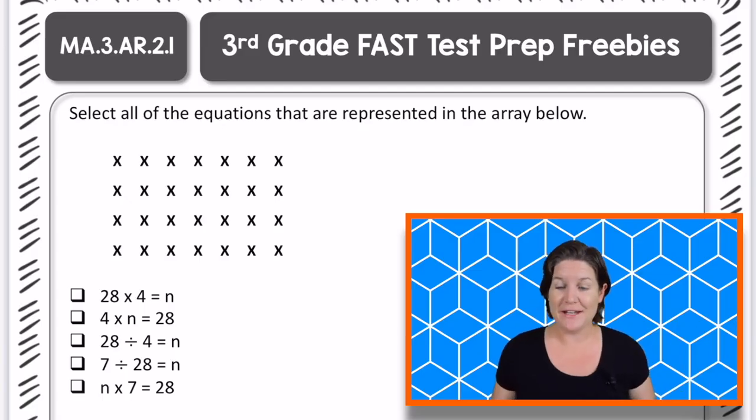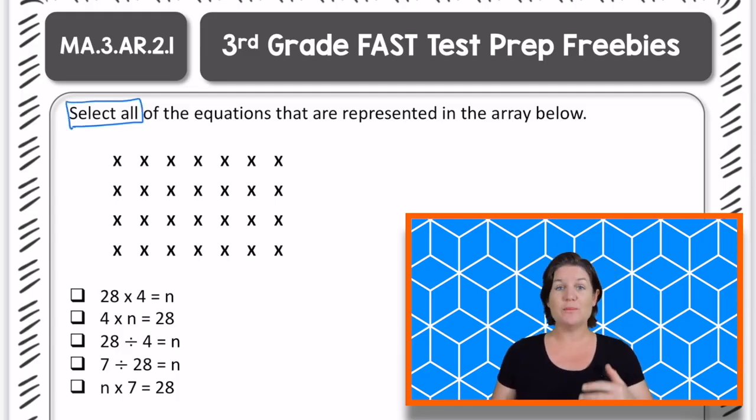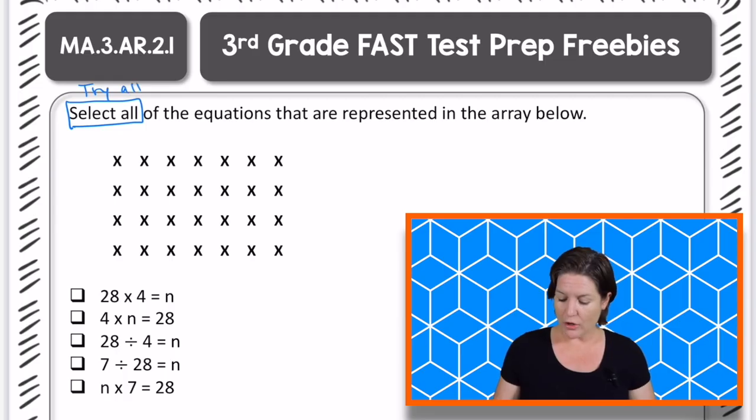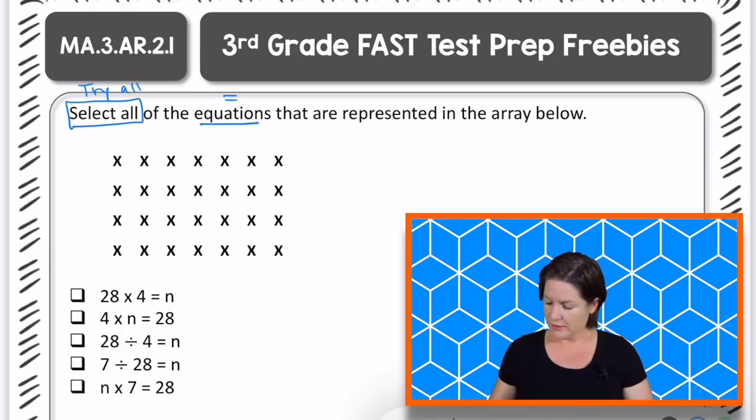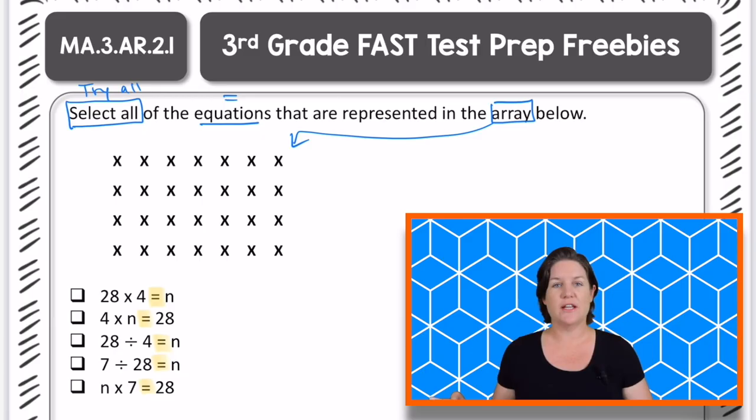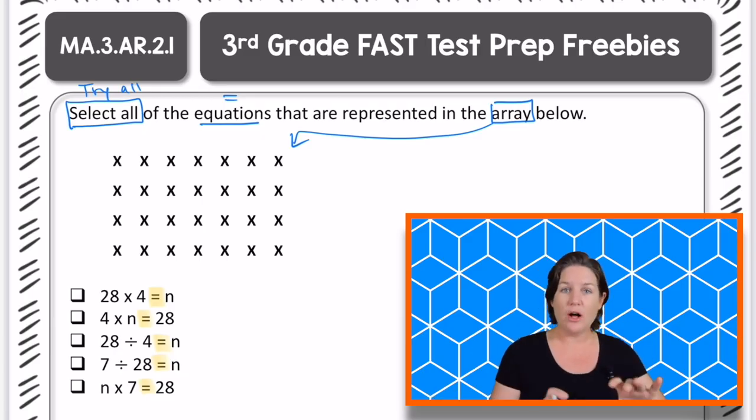Welcome back, 3rd grade. Let's go ahead and go over it. So it says to select all, which means that we need to try all of the answer choices. Select all of the equations that are represented in the array below. Well, this right here is the array. An array is represented by columns and rows with an equal amount in each row.